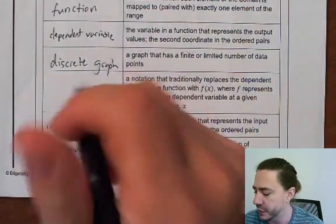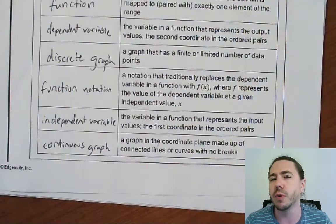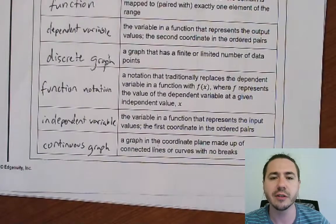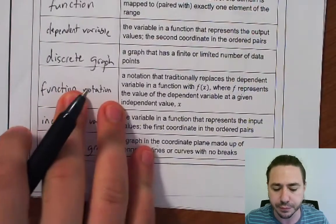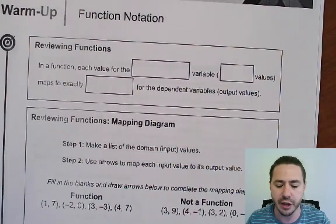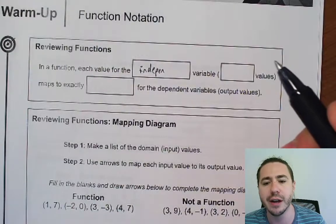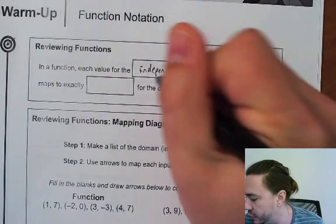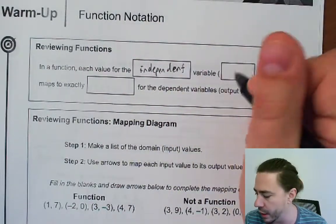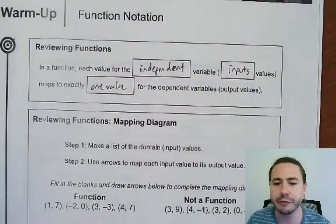The main focus today is function notation, which is just another way of writing an equation that is a function. Recall that a function is any relationship where you have exactly one output for every input. Each value for the independent variable maps to exactly one value for the dependent variable.